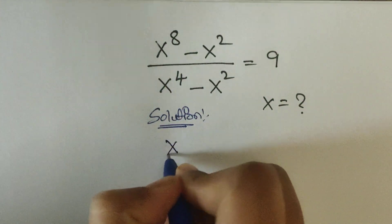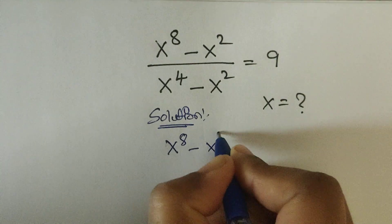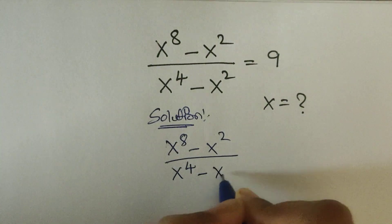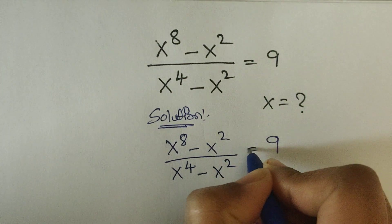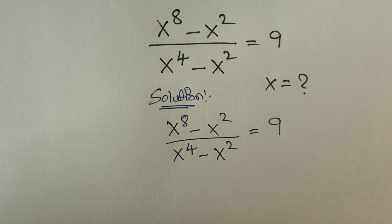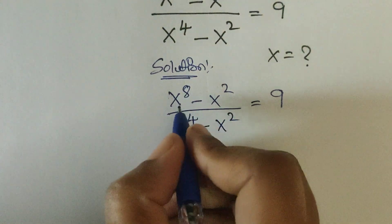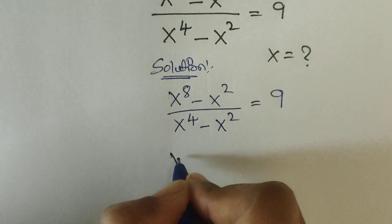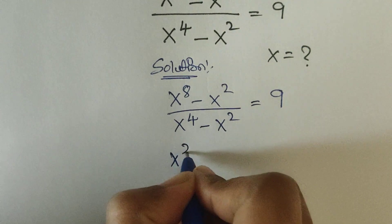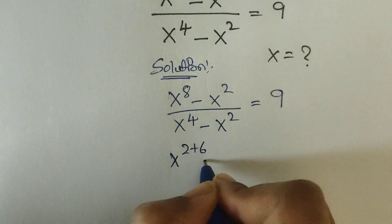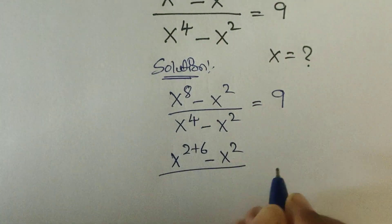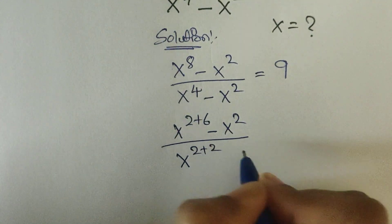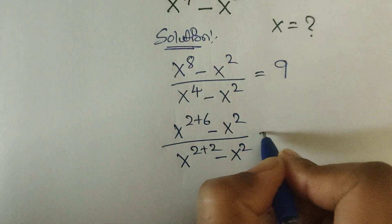So here we have x to the power of 8 minus x squared, divided by x to the power of 4 minus x squared, is equal to 9. Now, x to the power of 8 can be written as x to the power of 2 plus 6, so 2 plus 6 equals 8. So we have x to the power of 2 plus 6, minus x squared, divided by x to the power of 4, and we can write this as 2 plus 2, minus x squared, is equal to 9.